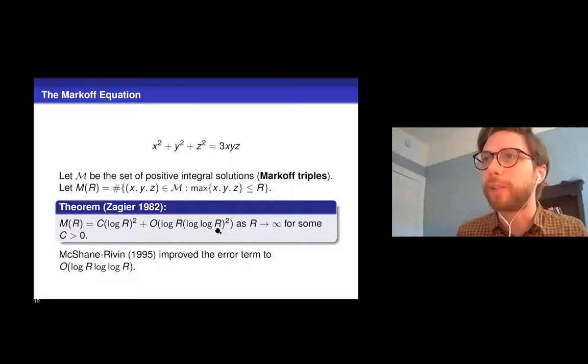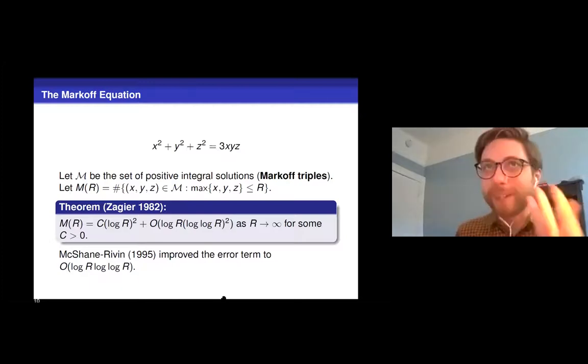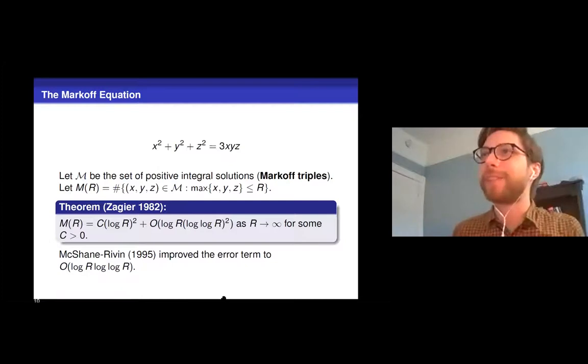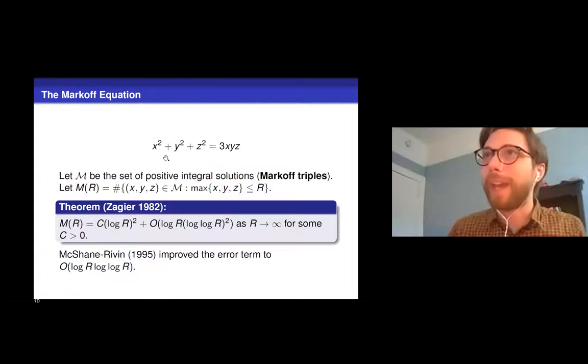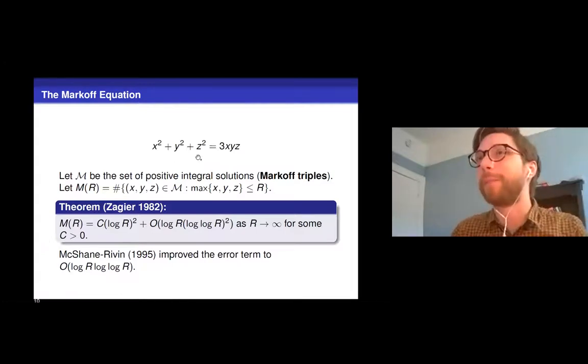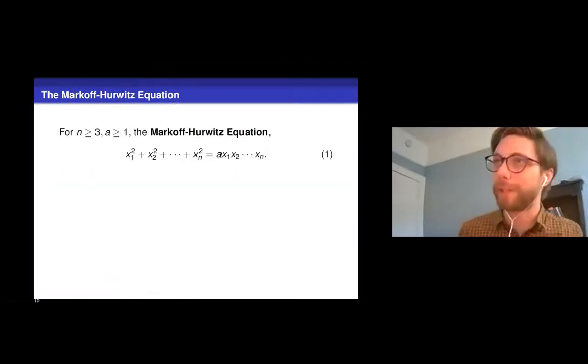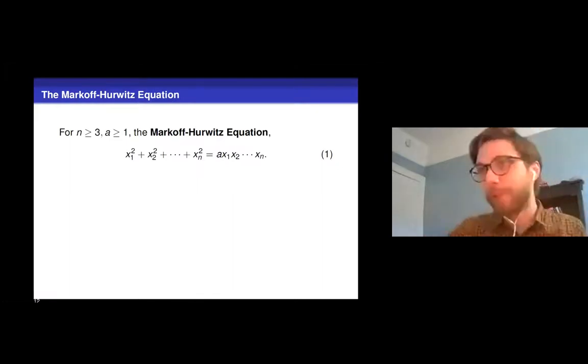So this is sort of the Markoff equation. But this is actually just the n equals three case of the type of equation that I'm going to be talking about today. Because you see this Markoff equation enough, and you're sort of naturally tempted to try to generalize it. And there's kind of one natural generalization staring at you in the face, maybe instead of looking at the sum of three squares, maybe you look at the sum of n squares.